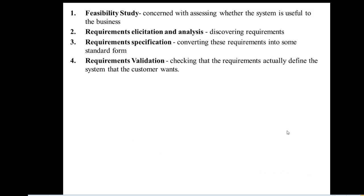To recap the four steps: feasibility study concerns assessing whether the system is useful to the business or not. The second stage is requirement elicitation and analysis, which discovers all requirements from the raw input. The next step is requirement specification, which converts all requirements into standard form with classification of user needs and system needs. Finally, requirement validation checks whether the requirements satisfy system needs or customer needs.